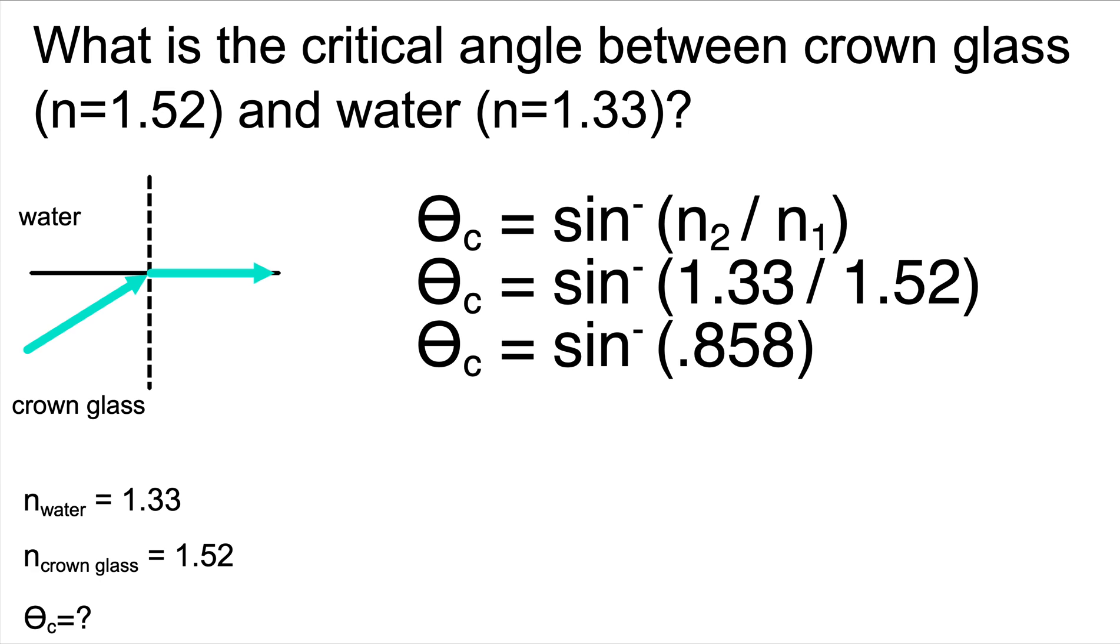Just a quick reminder, if you accidentally put 1.52 on the top and try to divide it by 1.33, your calculator will give you an error when you take the inverse sine of that answer. Your calculator will always let you know for these problems when you've made a mistake, because the sine of any angle can never be larger than 1.